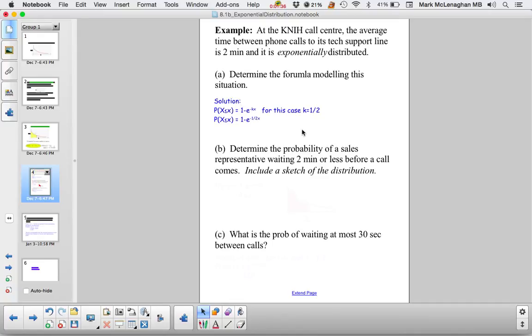Okay, so we use our formula. The probability P(X ≤ x) equals 1 minus e to the negative kx. There's a negative in front of the kx. In this case, k equals 1 over mu, which is 1 over 2, so we're at a half. Therefore the formula is 1 minus e to the negative 1/2 x.